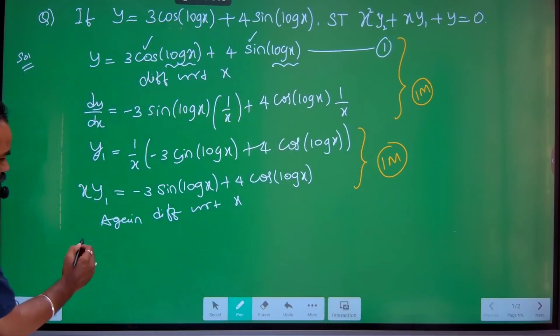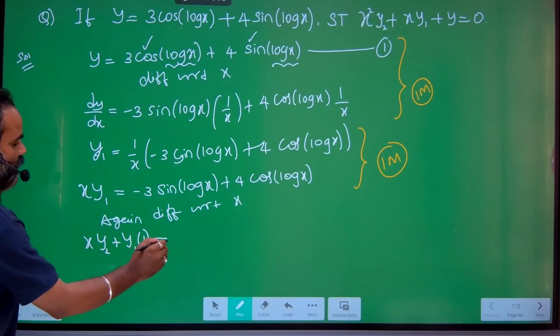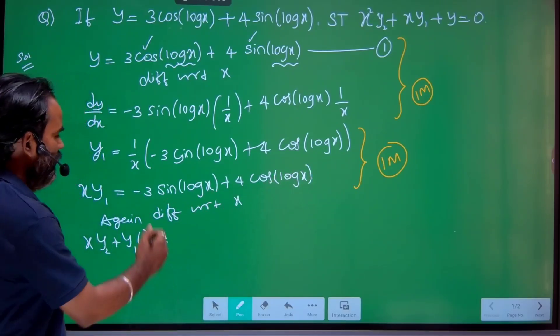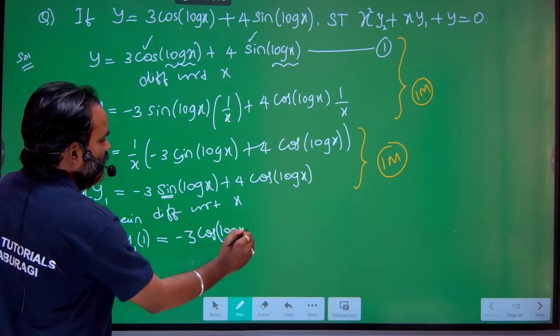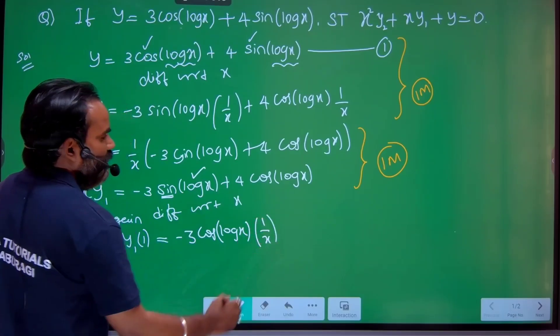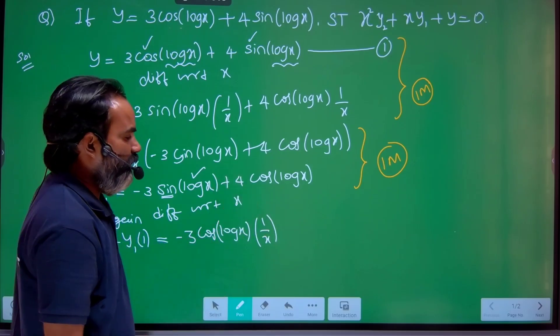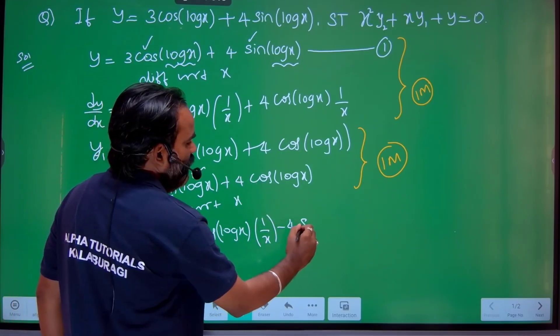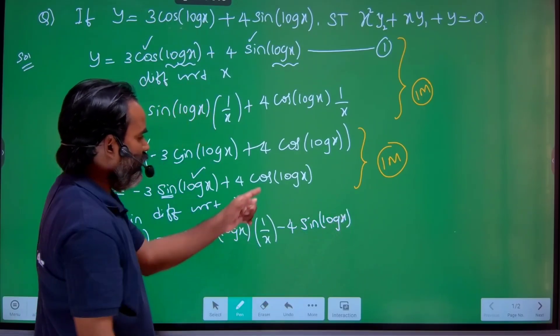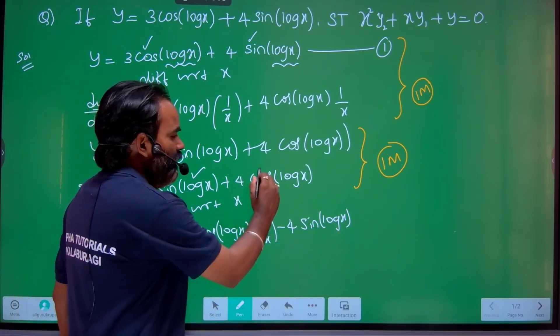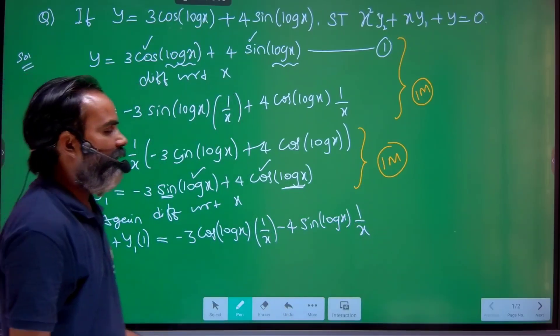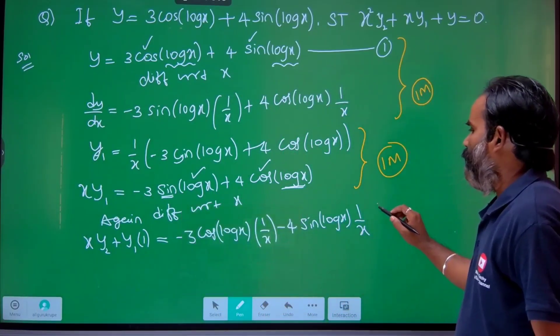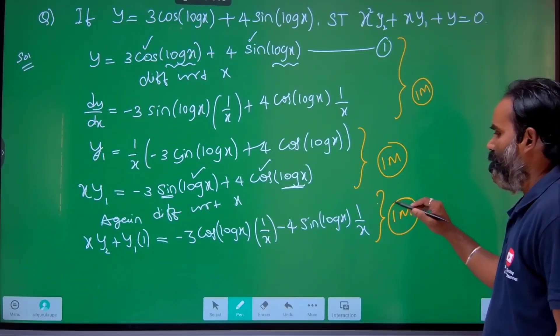Now xy₁: first function as it is, differentiation will be y₂. Then y₁ as it is, differentiation of x will be 1. Equal to - differentiate this: -3 as it is, sign differentiation will be cos, remaining as it is. Then logx differentiation will be 1/x. Then 4 as it is, cos differentiation is minus, so -4. Cos differentiation will be -sin logx. Already minus, so cos will be minus sin logx. Then logx differentiation will be 1/x.